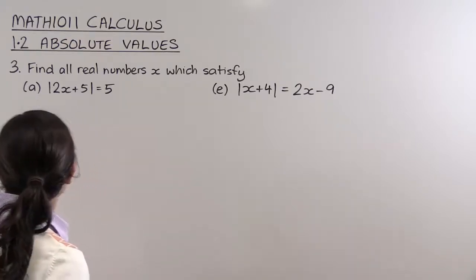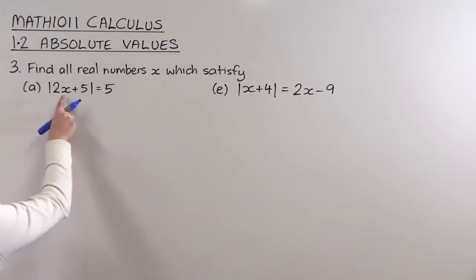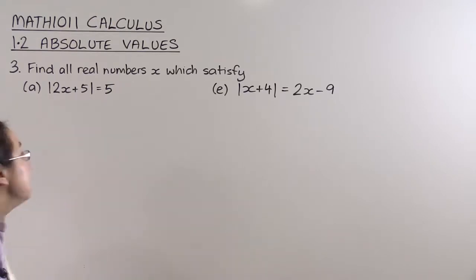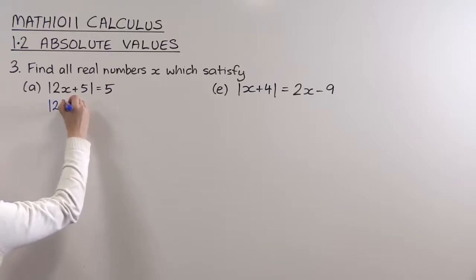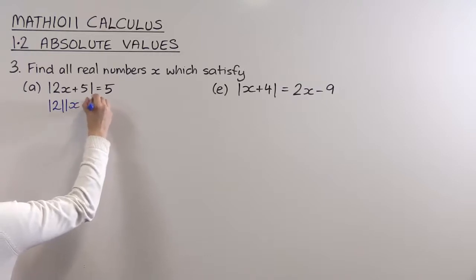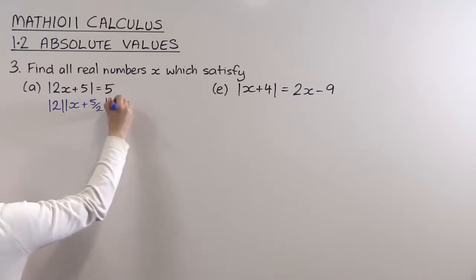So first of all, if we want to approach it that way, we really want just an x in here rather than a 2x. So I'm going to factorize the two out. If I factorize that 2 out, I'll get the absolute value of 2 times the absolute value of x plus 5/2 is equal to 5.